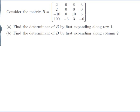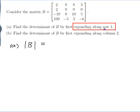Consider the matrix B, which is a 4x4 matrix as shown. Find the determinant of B by first expanding along row 1. Then find the determinant of B by first expanding along column 2. To figure out the determinant of a 4x4 matrix you need to pick a row or a column to expand along, and I've been told to expand along row 1, so that is what I will do.